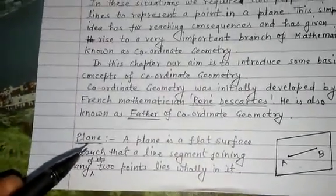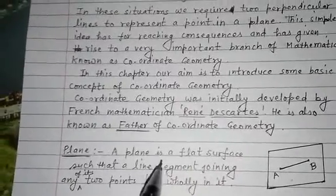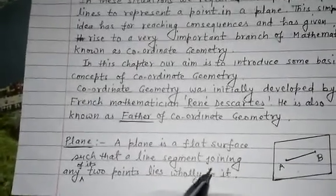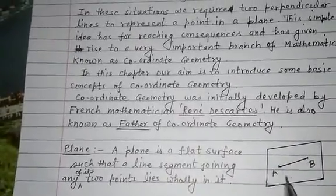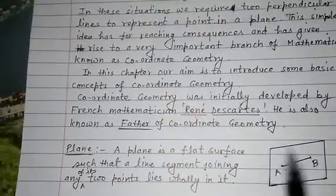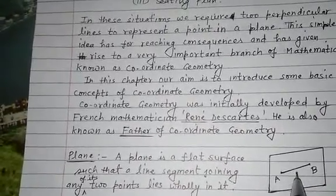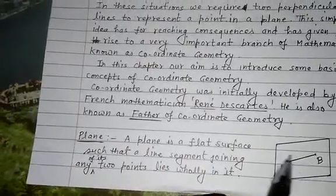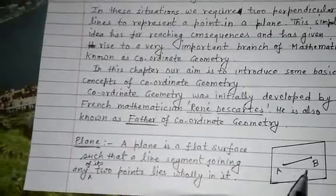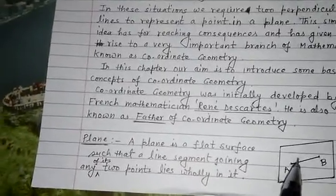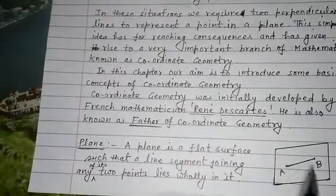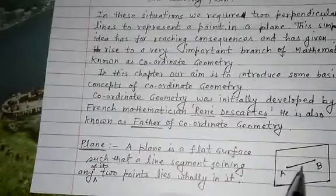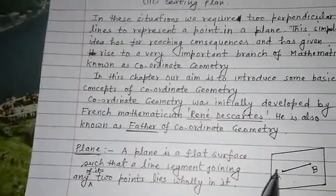Here one more term which is used is 'plane'. A plane is a flat surface such that a line segment joining any of its two points lies wholly in it. That means if we choose any two points on this surface and join them, we get a line segment which lies totally on that surface — and such a surface is called a plane.